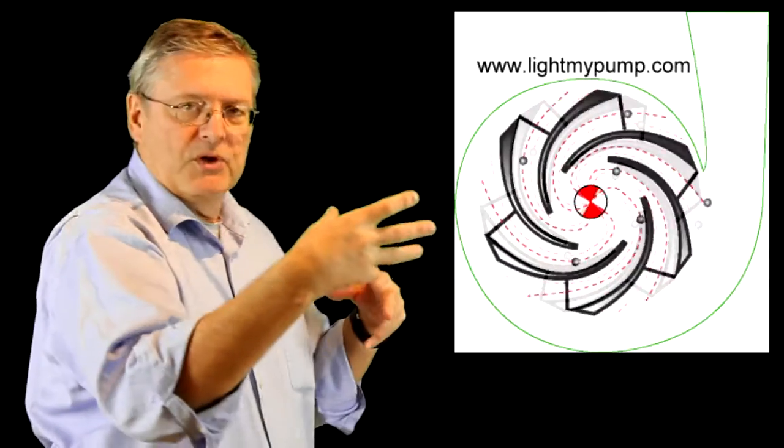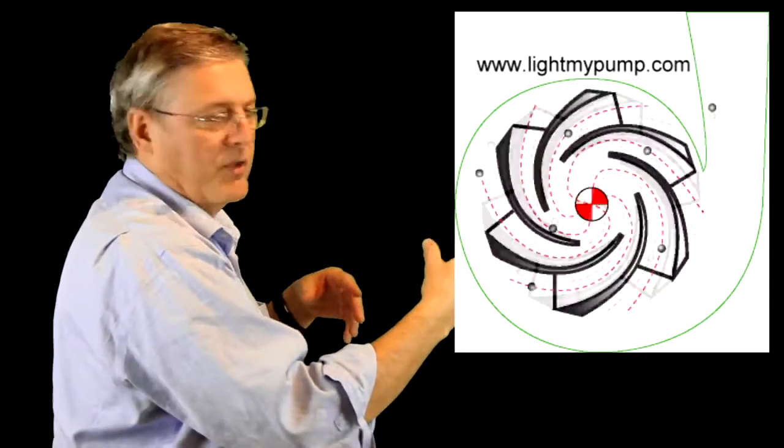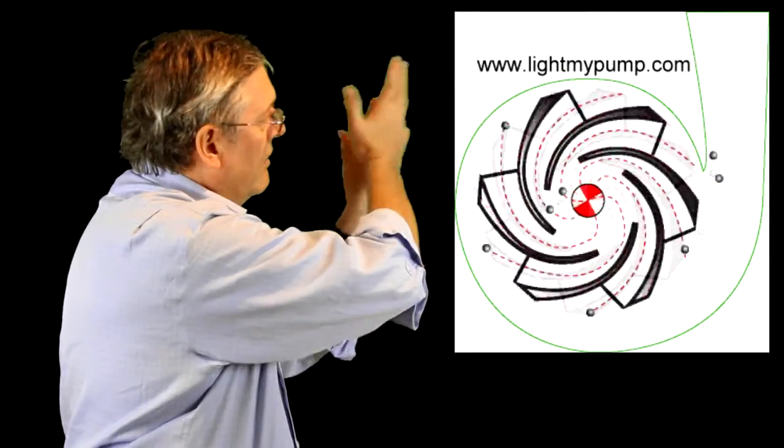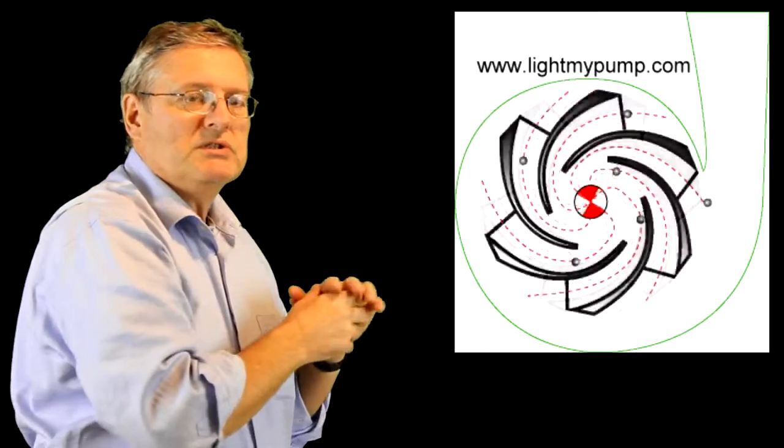We have the fluid coming into the eye of the impeller, turning 90 degrees and going into the space between two impeller vanes. It's rapidly moved and accelerated since the pump is turning very fast to the outside of the casing where it's traveling towards the discharge.